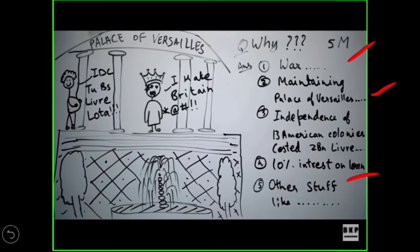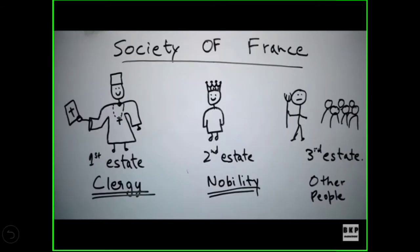Finally came the position of financial crisis in the country. Till now we have studied about the political administration — how the king's position became worse and how the Bastille was attacked and bombarded. Now we shall discuss about the society of France.